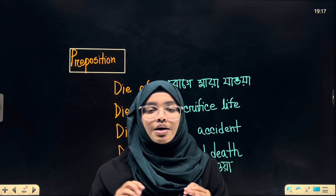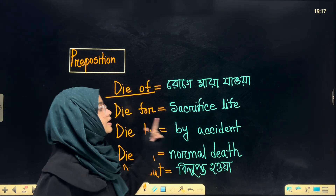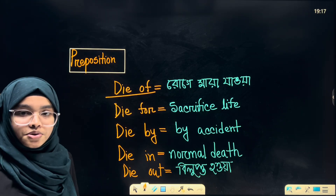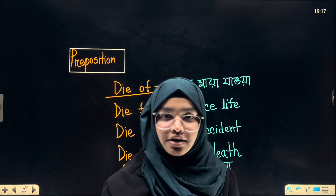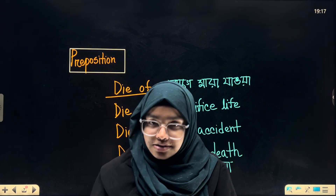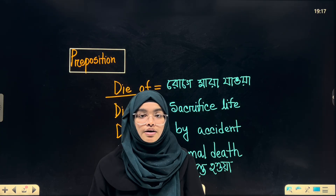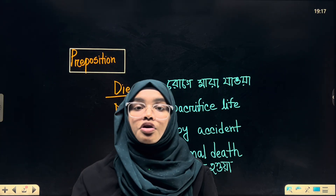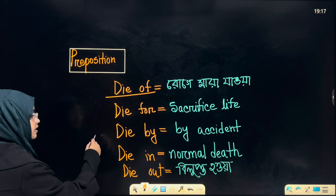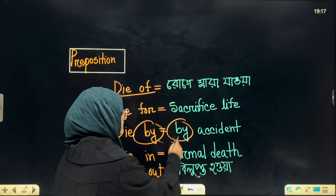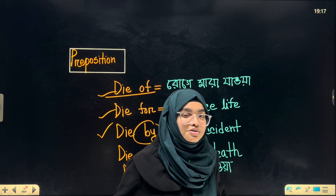Die of — means to die because of a disease: die of cancer, die of fever, die of diarrhea. Die for — means sacrifice of someone's life: the freedom fighters and martyrs died for the country, giving their lives for a cause. Die by — means by accident. Die in — means a natural or normal death. Die out — means extinction, like a species dying out.